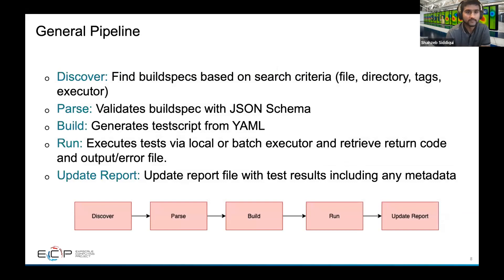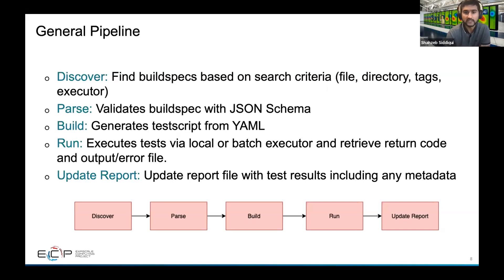The general pipeline for building a build spec goes through five stages. First, it discovers the build specs based on search criteria — file, directory, tags, or executor. Next, it parses the build spec against the JSON schema. Then it builds the test by taking the YAML file and generating a shell script. Then it runs the test by finding the appropriate executor — local or batch — and gets a return code plus output and error files. Finally, it updates a report with test results and associated metadata.